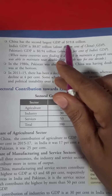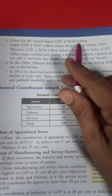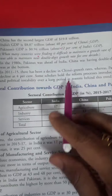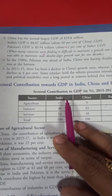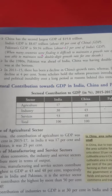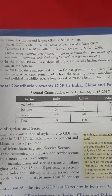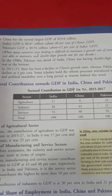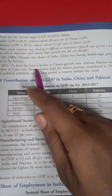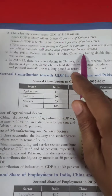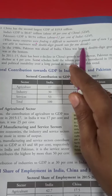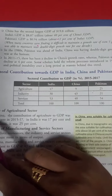China has the second largest GDP at 19.8 trillion. Pakistan's GDP is about 12% of India's GDP. When many countries were finding it difficult to maintain growth rates, China managed double-digit growth rates and introduced new development strategies.